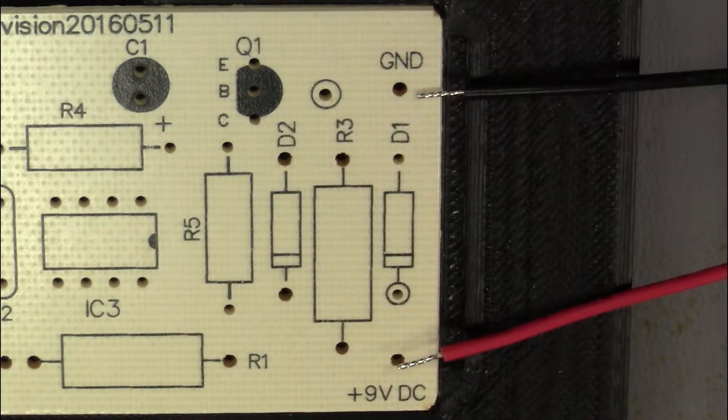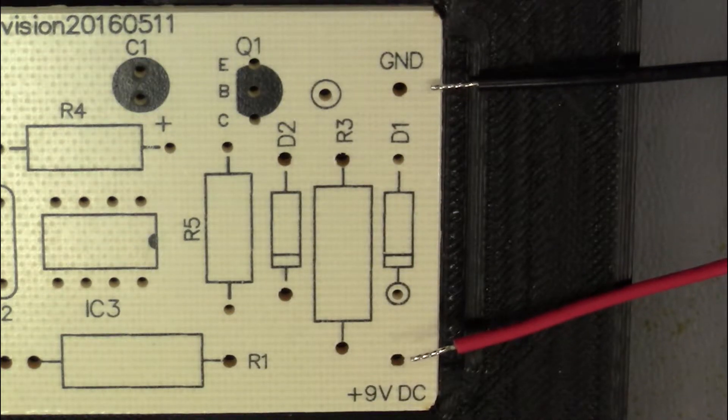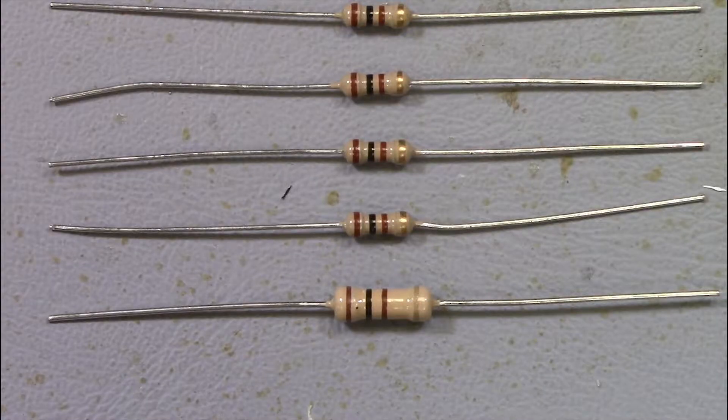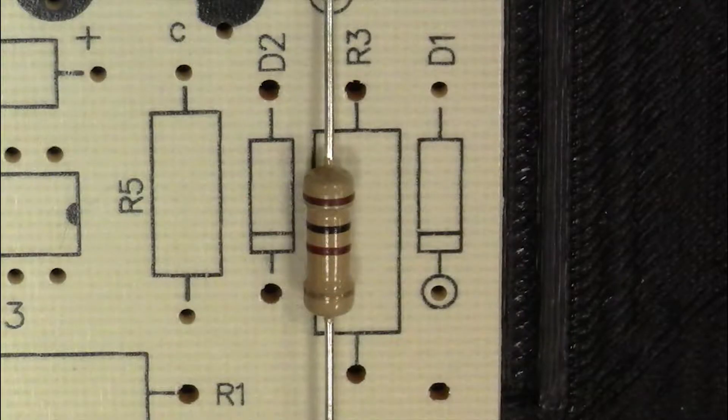The 9-volt battery clip has a standard red to positive and black to negative connection to the PCB. Use the resistor color code chart in the documentation to determine the values of the resistors. Notice one of the 100 ohm resistors is larger than the others. Its larger size allows heat to dissipate faster and hence can withstand a higher current and wattage. This 100 ohm half-watt resistor is R3.